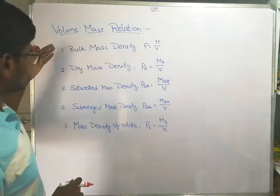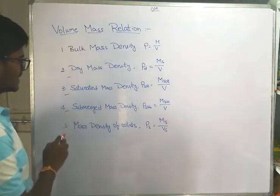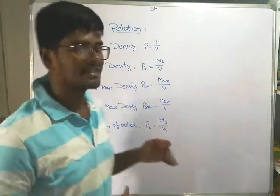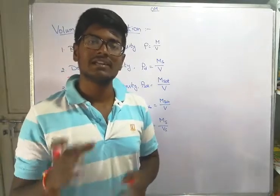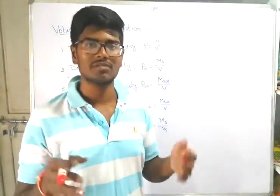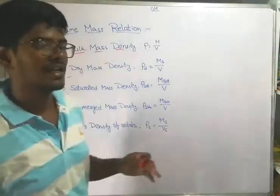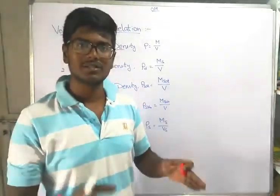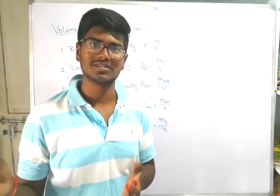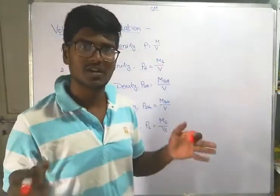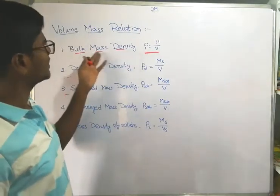The five types are: first, bulk mass density; dry mass density; saturated mass density; submerged mass density; and mass density of solids. The first one — bulk mass density — is the total mass of soil divided by the total volume of the soil. This is also known as bulk density or bulk mass density.